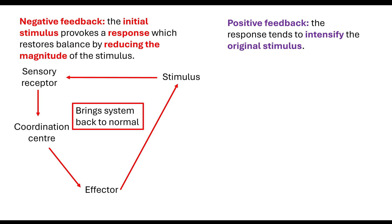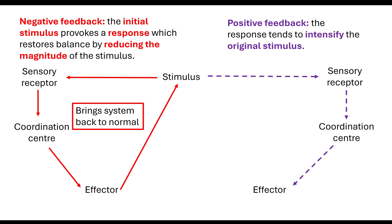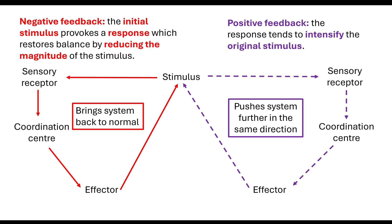You also have to know about positive feedback. With positive feedback, the response tends to intensify the original stimulus. Again, sensory receptors → coordination centre → effector, but this time we push the system further in the same direction as the stimulus. A classic example teachers love is contractions in the uterine wall, with oxytocin causing more contractions for childbirth.